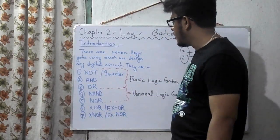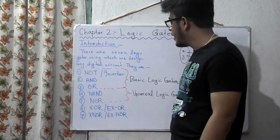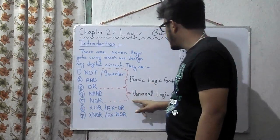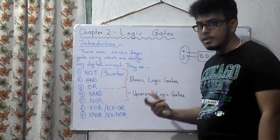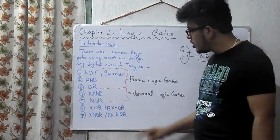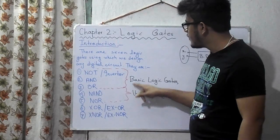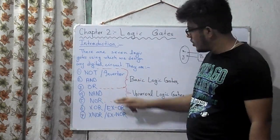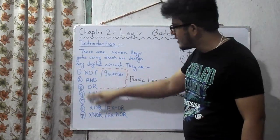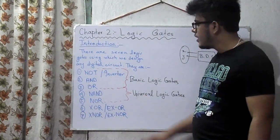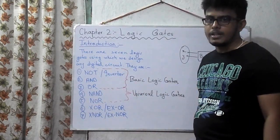These two gates are called universal logic gates. Why are these called universal logic gates? Because using these two gates you can design all the seven gates. Using NAND gate you can design any of the rest of the gates. Using NOR gate you can design any of the other gates.